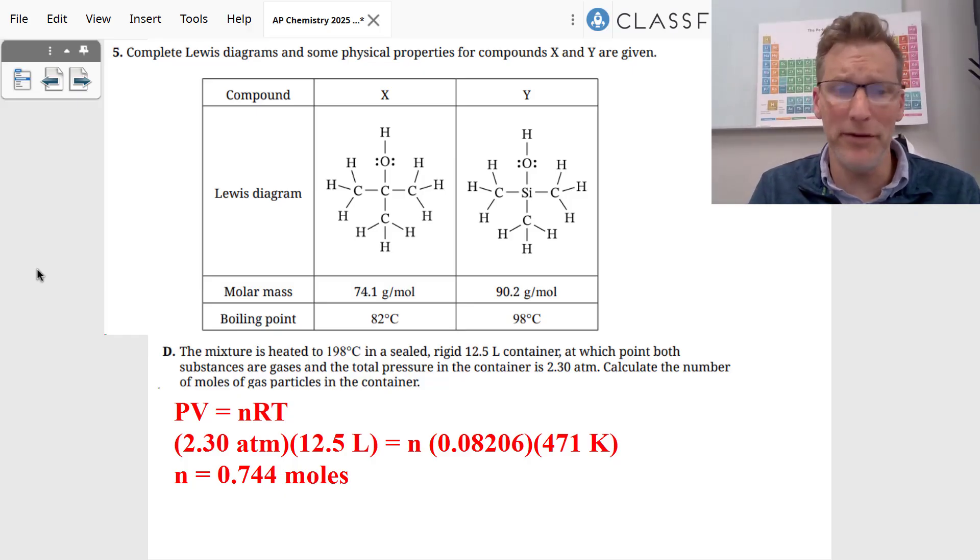Part D was just doing a PV=nRT problem. Pressure is 2.30 atmospheres, volume is 12.5 liters, R is always 0.08206 if you're using all these units, the temperature is 471 Kelvin. Yes, you have to change that temperature into Kelvin. And that gave you 0.744 moles of your gas.